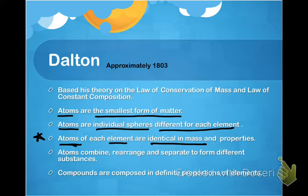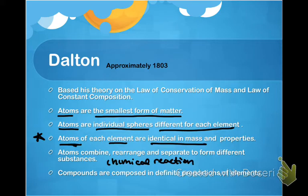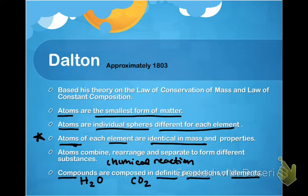One of his conclusions from his theory did not stand true to today. Atoms do combine, rearrange, and separate to form different substances — he was basically upholding what is known as a chemical reaction, so this is true. Compounds are composed in definite proportions of elements, which is true. Water has two hydrogens for every one oxygen; carbon dioxide has one carbon for every two oxygens — a one-to-two ratio of carbon to oxygen.